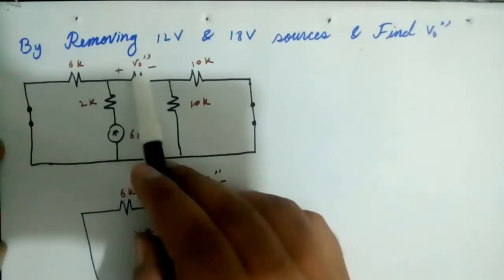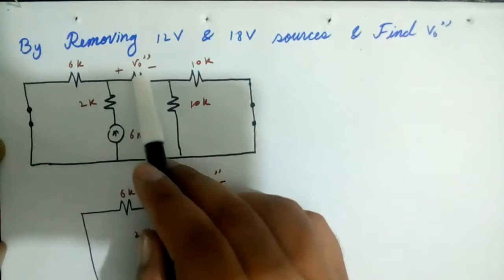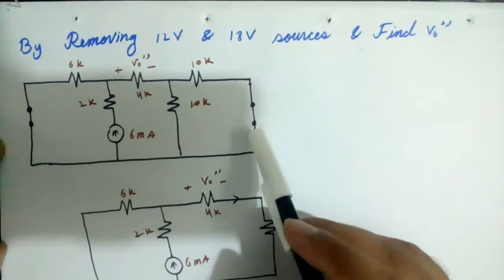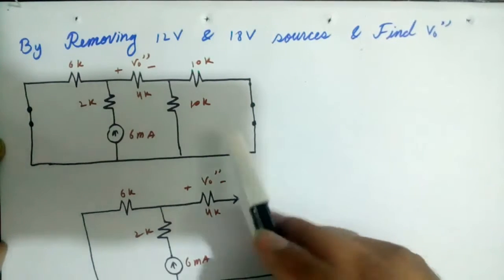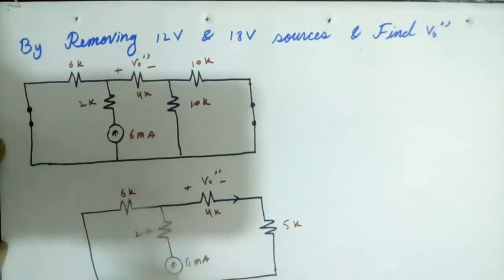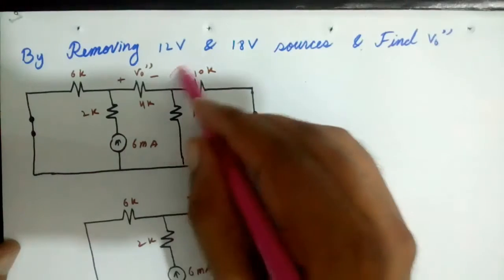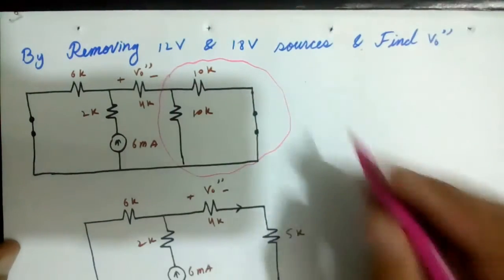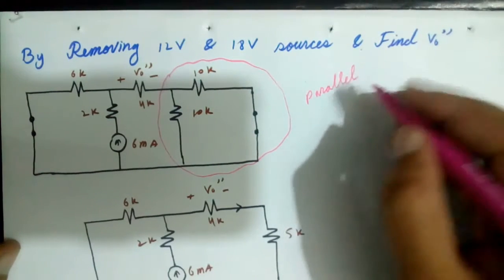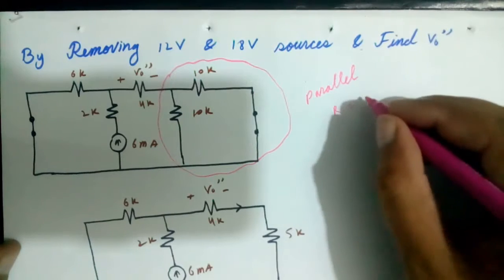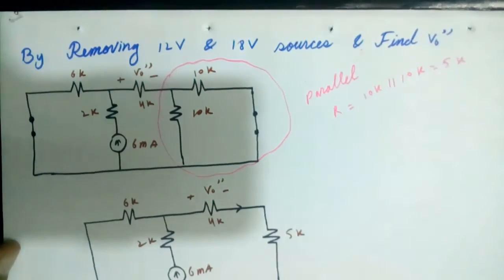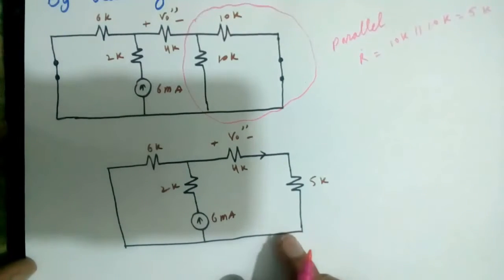Now we want to find V0 double dash. This voltage is due to the current source which is 6 milliampere. We remove the voltage sources — both are shorted. We know these two resistors are parallel, so the resultant value is 10K parallel 10K, which equals 5K. The simplified circuit is there.